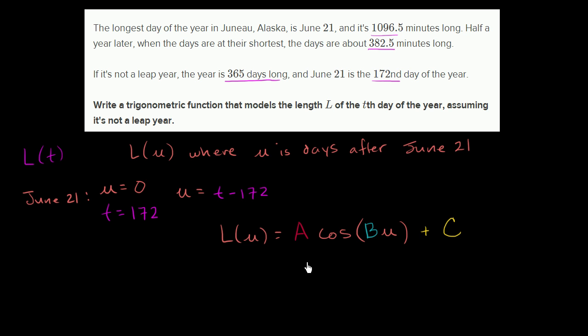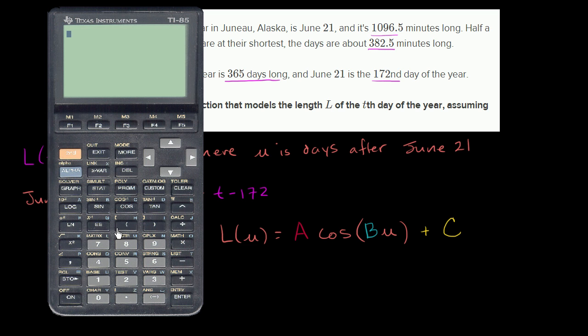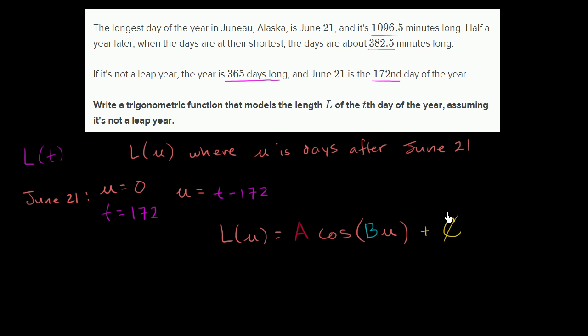So first let's think about the amplitude and what the midline is going to be. The midline is essentially how much we're shifting the function up. The midline is going to be halfway between these two numbers: 1096.5 plus 382.5 divided by 2 gets us to 739.5. So C is equal to 739.5.